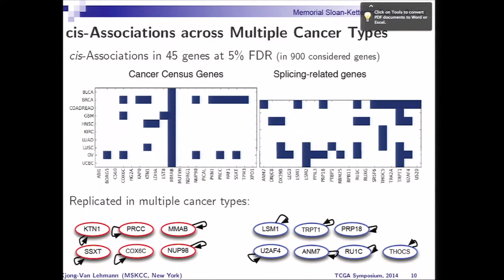If you're actually doing this across multiple cancer types, you get to this nice plot here. This is basically a plot on a set of cancer census genes, and we have tried to indicate the different cancer types on the left. Each blue dot marks a cis association within the cancer type of a particular gene. This is particularly remarkable for MMAB, where we can replicate its cis association in each of the cancer types using just that subset of samples. On the right side, you can see the same thing done on splicing-related genes, including some interesting ones like RBM25. We can replicate a lot of these cis associations across different cancer types, all at 5% FDR.